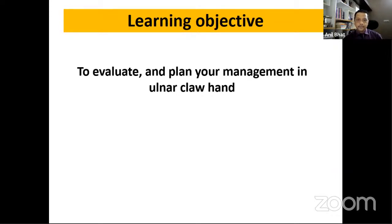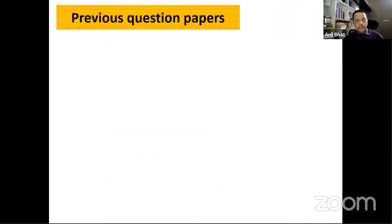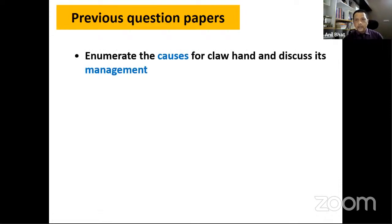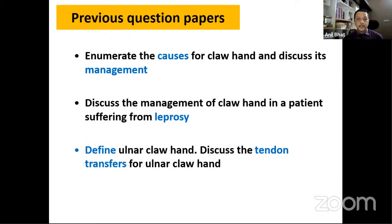The examiner wants you to tell which nerve is involved — whether it's ulnar or ulnar and median — and at what level: high or low. The etiology and any complications also need to be identified. Common exam questions include: enumerate the causes, management especially in Hansen's/leprosy, definition of ulnar claw hand, and tendon transfers. I'll try to make tendon transfers as simple as possible.